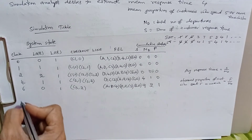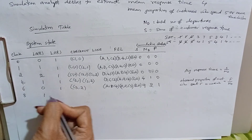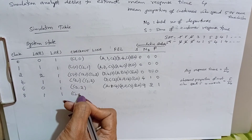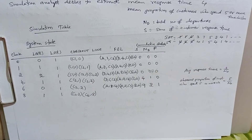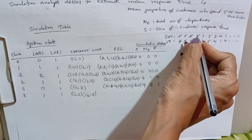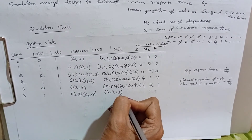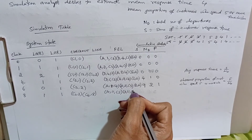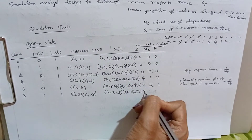Clock advances to the imminent event at time 8. At clock time 8, one more customer arrives — C4, who must wait in the queue. The checkout line shows C3 in service (arrived at time 2) and C4 waiting (arrived at time 8). The next inter-arrival time is 3, so the next arrival is at time 11, customer C5. No departures have occurred since the last update, so cumulative statistics remain unchanged.